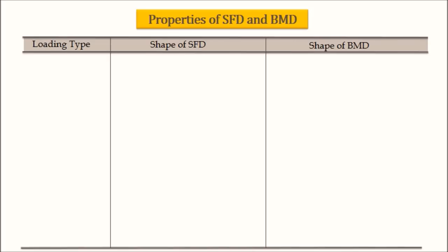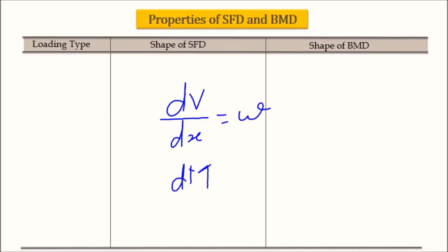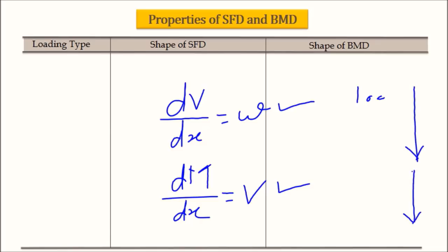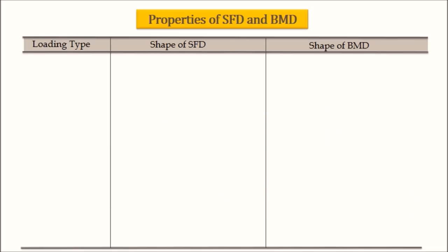I want to recall those two fundamental relations from session 1. First, the derivative of shear force is the rate of loading on the beam, and the derivative of bending moment is the shear force. Based on these two relations, we derived the relationship between the loading diagram, the shape of the SFD, and the BMD. Moving from loading diagram toward SFD and then BMD means integrating; going from BMD toward SFD and the loading diagram means differentiating.